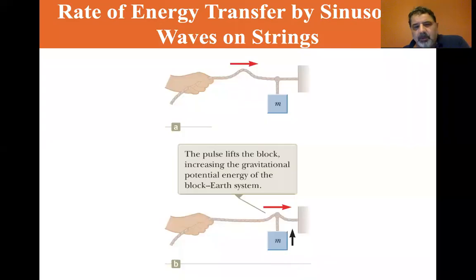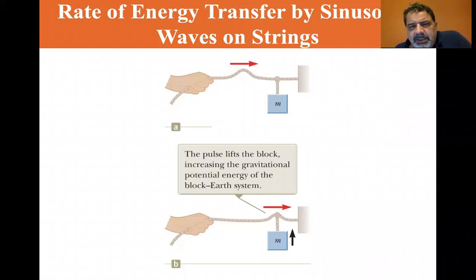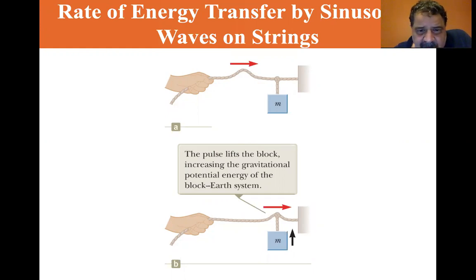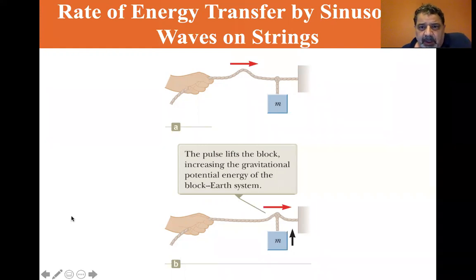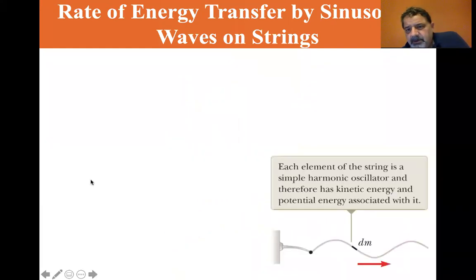We are at section 16.4: rate of energy transferred by sinusoidal waves on strings. If we send a pulse down a string, we know there's energy in it because it's able to lift a mass — the pulse lifts the block, increasing the gravitational potential energy of the block-earth system. Each element of the string is a simple harmonic oscillator and therefore has kinetic energy and potential energy associated with it.